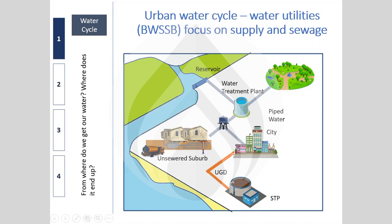Water comes to an underground sump in your building, is pumped to an overhead tank, and flows by gravity into taps. Wastewater then goes through an underground drainage system, possibly through pumping stations, to a sewage treatment plant. The treated water is released into a lake or river. This is the engineering conceptualization of the urban water system today.